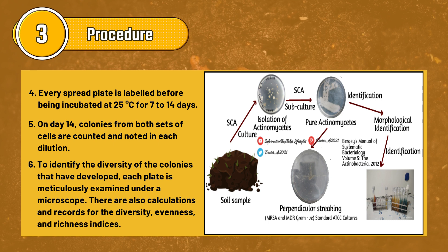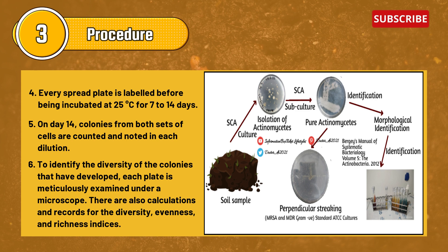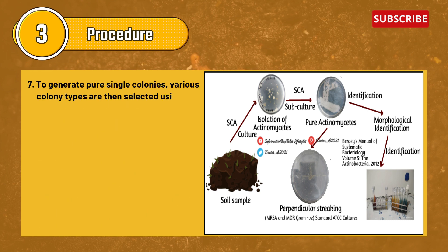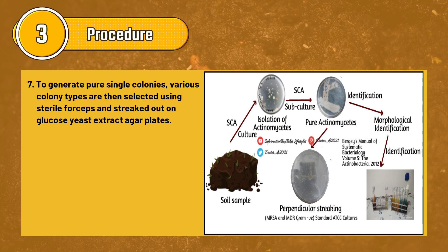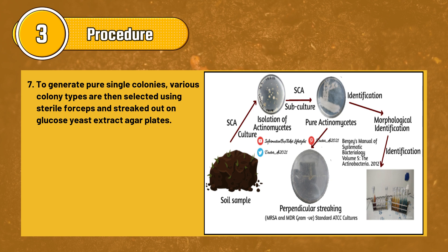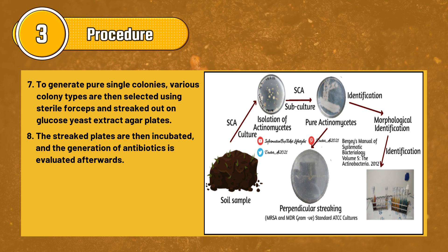To identify the diversity of colonies that have developed, each plate is meticulously examined under a microscope. Calculations and records are made for diversity, evenness, and richness indices. To generate pure single colonies, various colony types are selected using sterile forceps and streaked onto glucose yeast extract agar plates. The streak plates are then incubated and antibiotic production is evaluated.